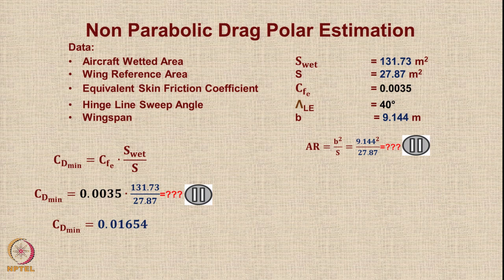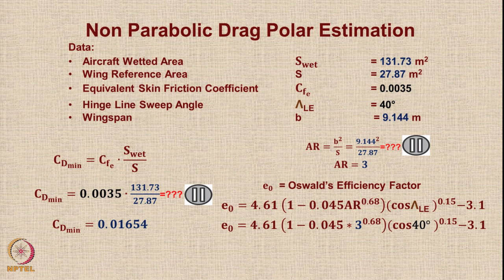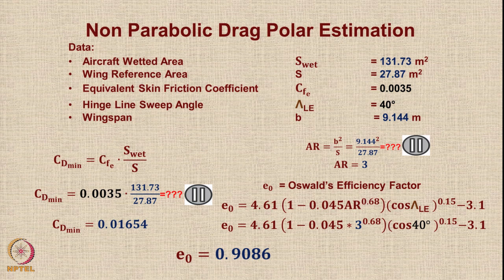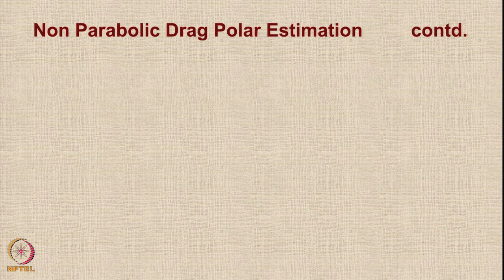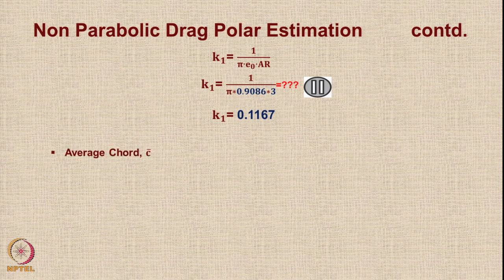The aspect ratio is b²/S = 3. E0, the Oswald efficiency factor, is calculated using the formula with AR equal to 3 and leading edge sweep lambda_LE equal to 40 degrees. Please calculate these values yourself. The value of E0 comes out to be 0.9086. For K1 = 1/(π·E0·AR), with known E0 and AR, K1 equals 0.1167. The average chord is span divided by AR = 9.144/3 = 3.048 meters.